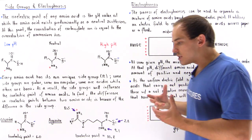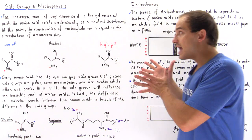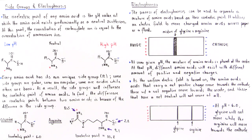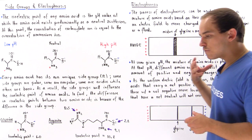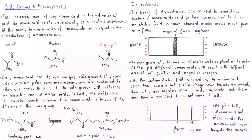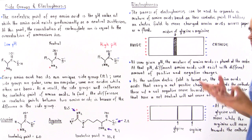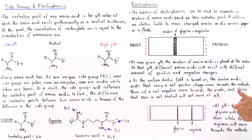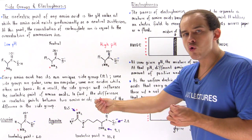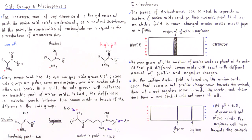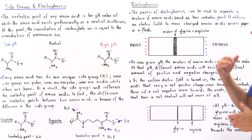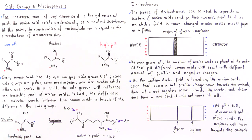The isoelectric point of amino acids leads us directly into the next topic: electrophoresis. Electrophoresis is a process — a method that can be used to separate a mixture of different amino acids based on their isoelectric point, based on the charge found on the amino acid. It utilizes an electric field to move amino acids along either a paper or a fluid.